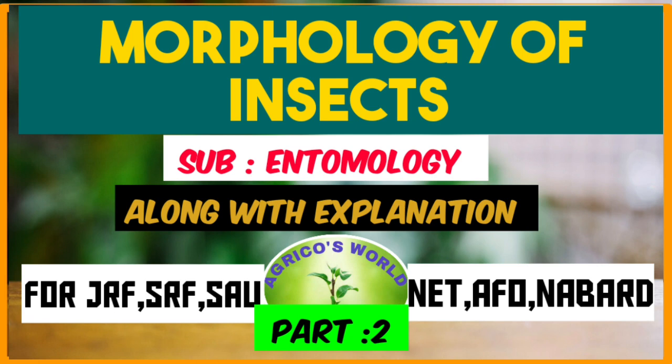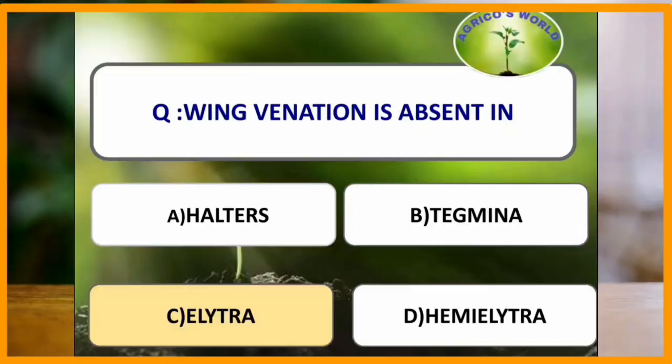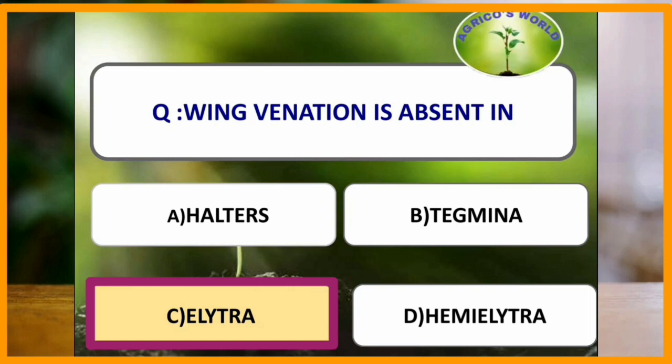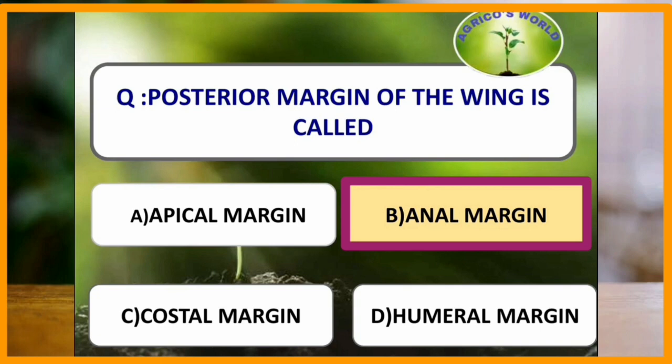Wing venation is absent in which type of wings? Wing venation is absent in elytra. Elytra are the type of wings which are found in forewings of beetles. The posterior margin of the wing is called the anal margin, whereas the anterior margin is called the costal margin and the outer margin is called the apical margin.